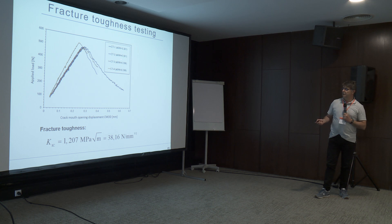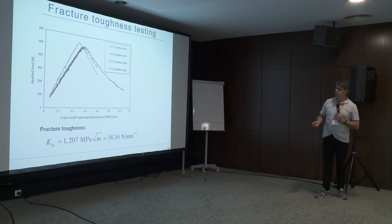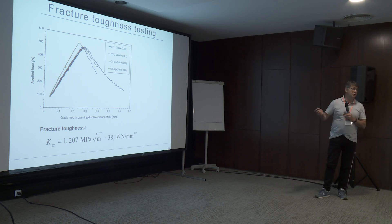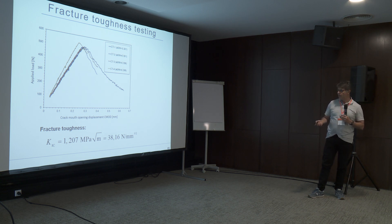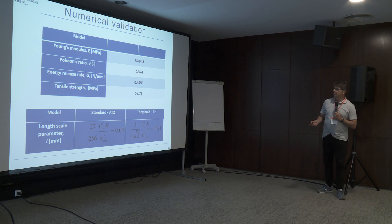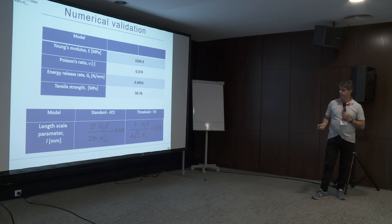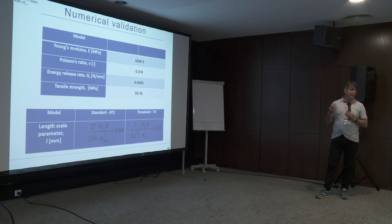We have four specimens — two with almost the same crack depth, and all four produced three curves which overlap each other, and one deviated. We still don't know why. It is interesting to find which parameters from tensile testing to use. Since the fracture toughness is almost the same, we used the same fracture value. From the tensile testing we also obtained the energy release rate. For the AT2 approach in the phase field, we calculated the length scale parameter L as 0.4 millimeters. For the threshold approach, we calculated 0.21 — a five-times difference.